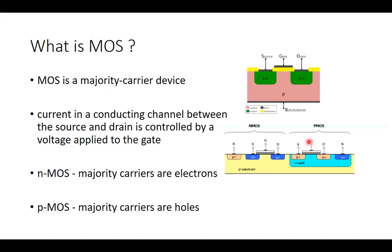When you apply a sufficient voltage at the gate terminal, you have a number of carriers in the channel between source and drain, and the current in this conducting channel will again be controlled by the voltage you apply at the gate. Since this is a P-MOS transistor, the majority carriers in the channel are holes.